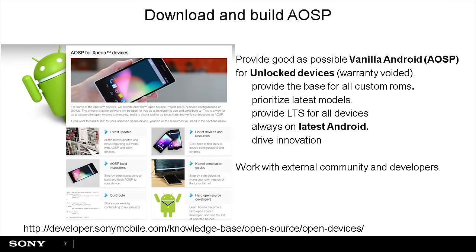Our goal with this program is to provide as good as possible a vanilla AOSP experience for unlocked devices. We want to provide a base for custom ROMs. We prioritize the latest models and provide long-term support for all devices, including the old ones like the 2014 dual-core devices. You also get the latest version of Android — we published the guide on how to build Android M seven days after Google released the open source code.